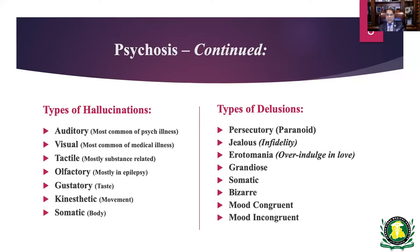Delusions can be persecutory or paranoid, jealousy type, erotomania — where a person of higher status, usually of opposite gender, believes someone is intensely in love with them despite contrary evidence. Grandiosity usually occurs in mania. Somatic delusions we discussed. Bizarre delusions, which don't make sense, are characteristic of schizophrenia. If a person is comfortable with their delusion, it is mood congruent; if they feel distressed about their beliefs, it is mood incongruent.